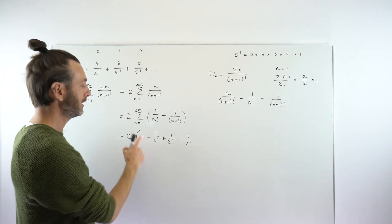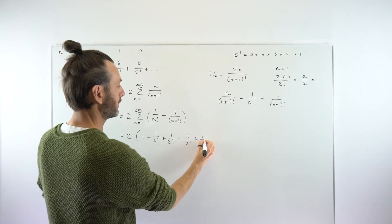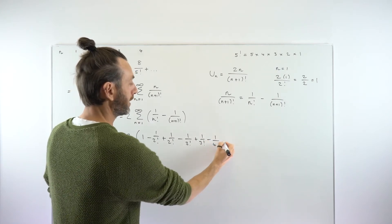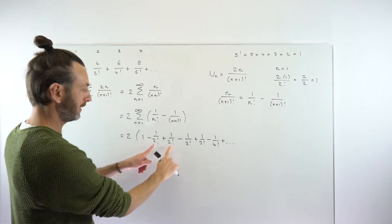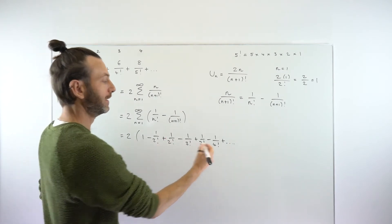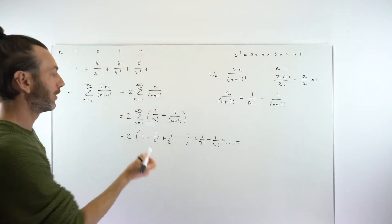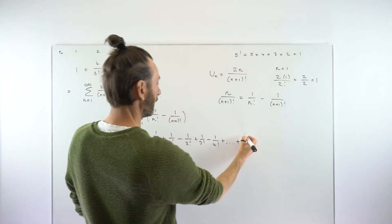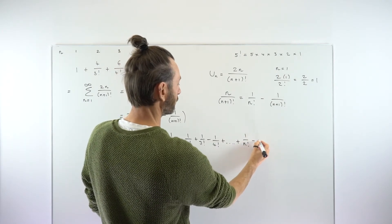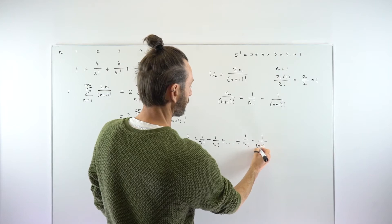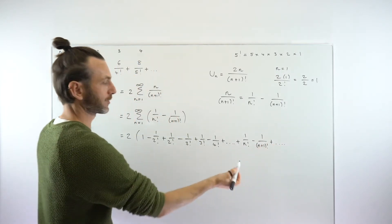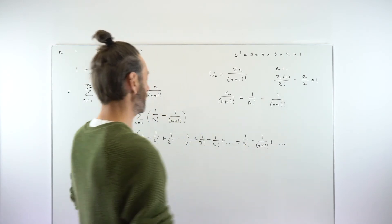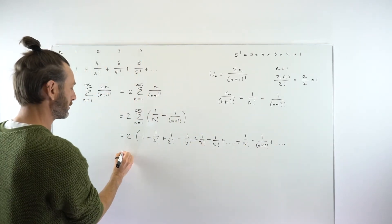That pattern would carry on indefinitely — all the way to 1/n! minus 1/(n+1)!, and then the next term would be 1/(n+1)! minus 1/(n+2)!, and so on. But we can clearly see something happening here. This is called a telescoping series — basically when you write terms in such a way that they start to cancel. Minus 1/2! plus 1/2! cancel, same with the 1/3! terms, and the same with the 1/4! terms. Everything cancels apart from the very last term.